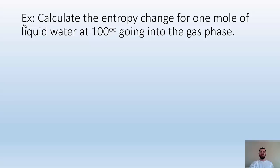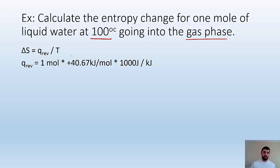It must also be in Kelvin. We got to use the absolute scale of temperatures. Make sure you're using Kelvin, not Celsius, definitely not Fahrenheit. And Q rev is the heat transfer for a reversible process. Here's a problem. Calculate the entropy change for one mole of liquid water at 100 degrees Celsius going into the gas phase.